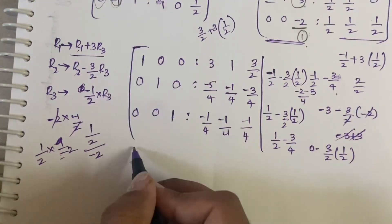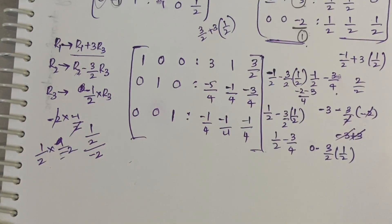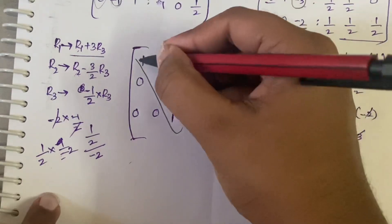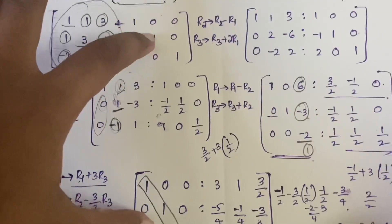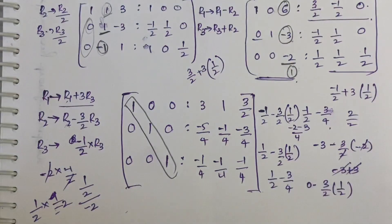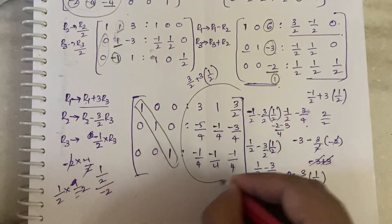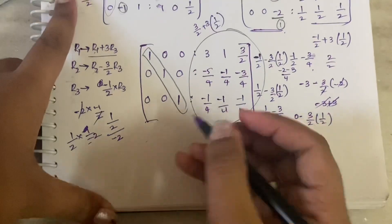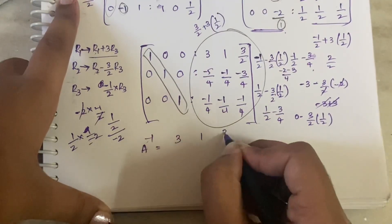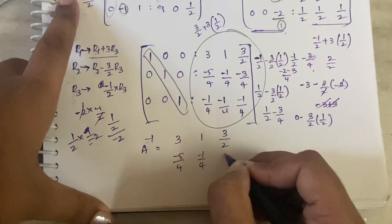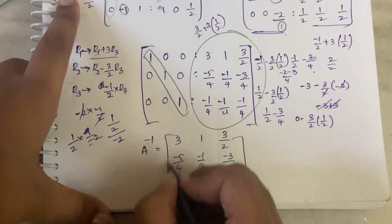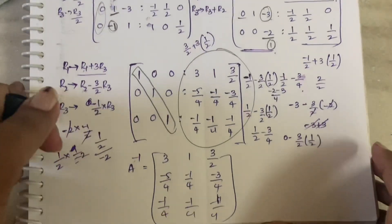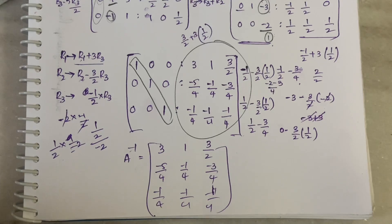You can stop the process now because you've obtained the identity matrix on the left side. Initially the right side was the identity matrix; now the left side is identity. Whatever matrix you got on the right side is A inverse. So A inverse equals: [3, 1, 3/2 / -5/4, -1/4, -3/4 / -1/4, -1/4, -1/4]. You can verify this using adjoint A divided by det A.